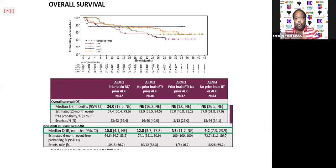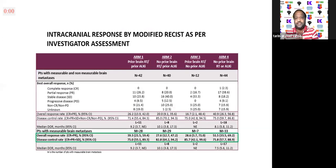The overall survival data in patients with brain mets, looking at unmeasurable disease, was a staggering approximately two and a half years — around 26 to 27 months.